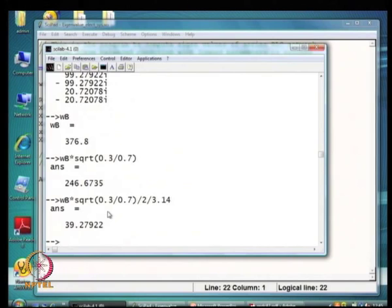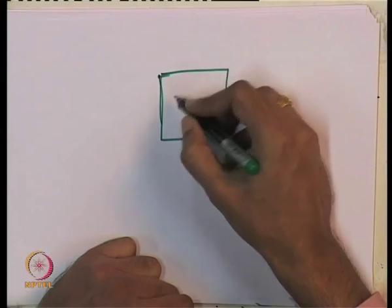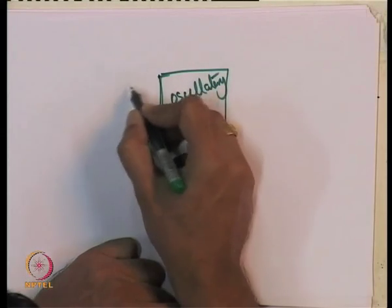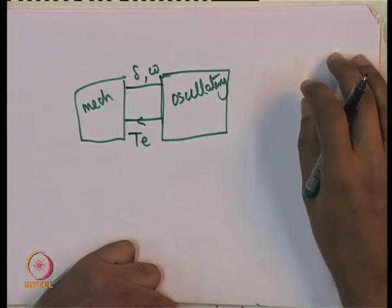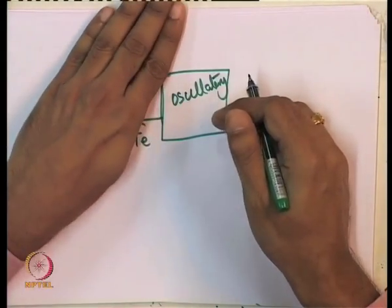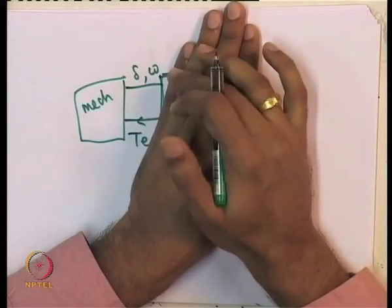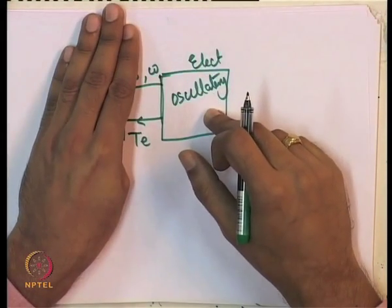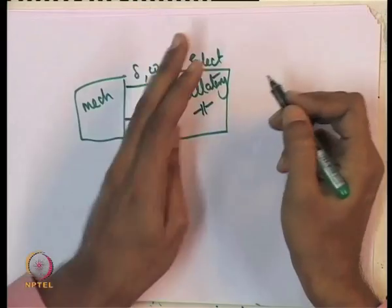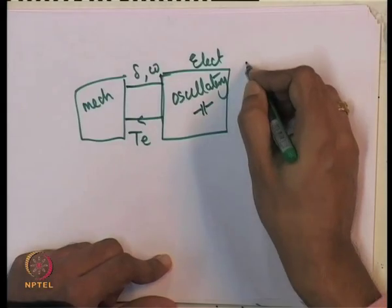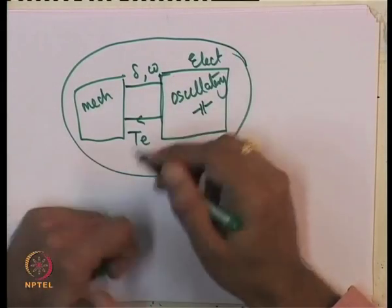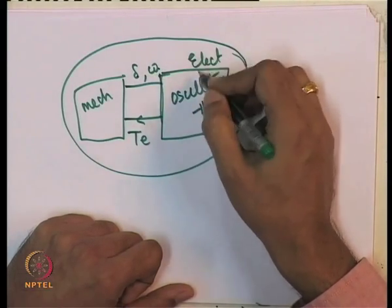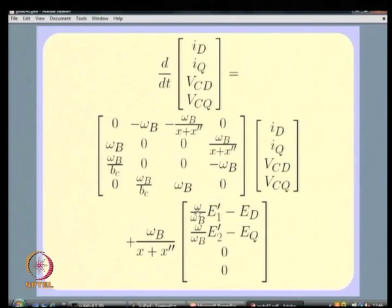The point now is: the electrical network which is series-compensated has oscillatory eigenvalues, and the mechanical system also has an oscillatory response — delta, omega, and T_e interact. When you put them together, it becomes a coupled system. Delta and omega affect the electrical system, and the mechanical system is affected by the electrical torque.